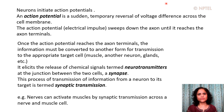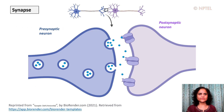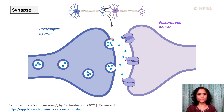For example, nerves can activate muscle cells by synaptic transmission across a nerve and muscle cell junction, and they can also communicate with other nerve cells. At the synapse, the neuron sending information is referred to as the presynaptic neuron, and the cell receiving the information is the postsynaptic neuron. The fluid-filled gap between the pre- and postsynaptic membranes is referred to as the synaptic cleft.